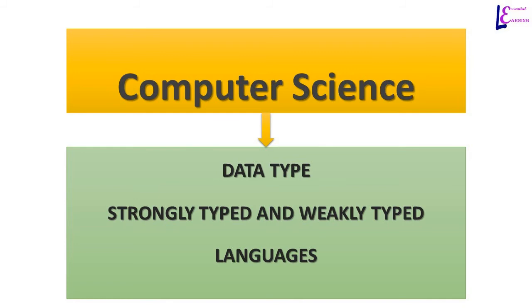Based on whether a data type will be specified for a variable, or a variable will be declared without a data type, programming languages are classified into two categories: strongly typed languages, also known as static languages, and weakly typed languages, also known as dynamically typed languages.